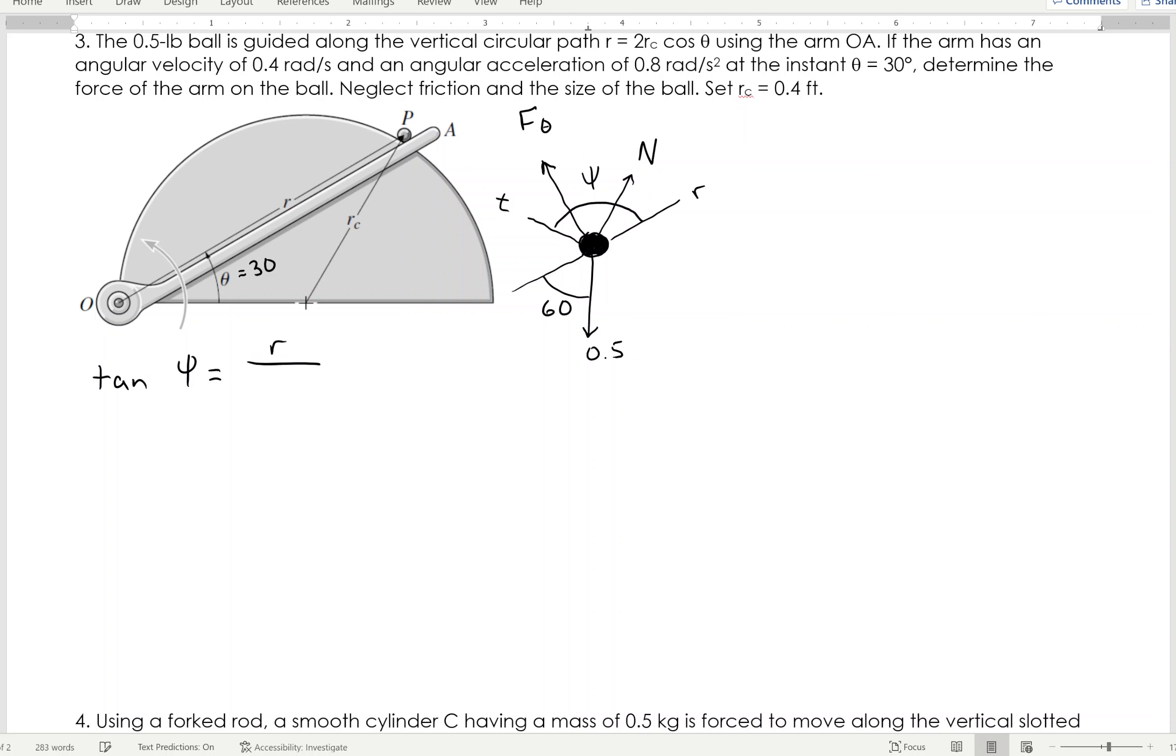And in the book, they tell you that tangent of psi is equal to R divided by the derivative of R with respect to theta. So, plugging that in, I know R is given as 2 times RC, which is given to be 0.4 times the cosine of theta, which is 30, as given in the problem there.